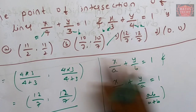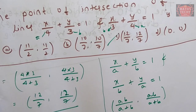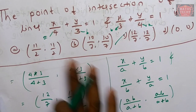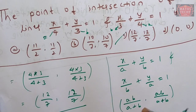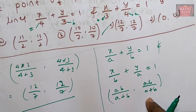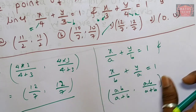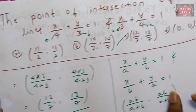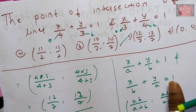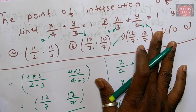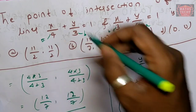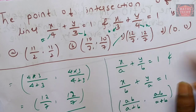So with the intercept form, there are a minimum of 30 to 40 shortcut tricks. Using the formula AB divided by A plus B, we can quickly find the point of intersection. This saves time in the exam.